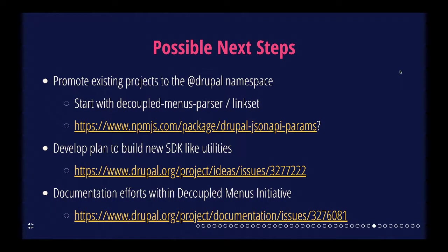Some possible next steps: I would love to see us promote more things into the Drupal namespace on NPM. Two packages are coming out of the Decoupled Menus initiative — we've been talking with the JavaScript maintainers about getting that done. Something like Drupal JSON API Params, which is used by a lot of decoupled projects and has found success in the community, could potentially move to the Drupal namespace. I also created an issue in the ideas queue about a proposal to formally start a process to build SDK or client-like utilities in Drupal. If that idea is interesting to you, I'd encourage you to check in on that issue and leave comments.